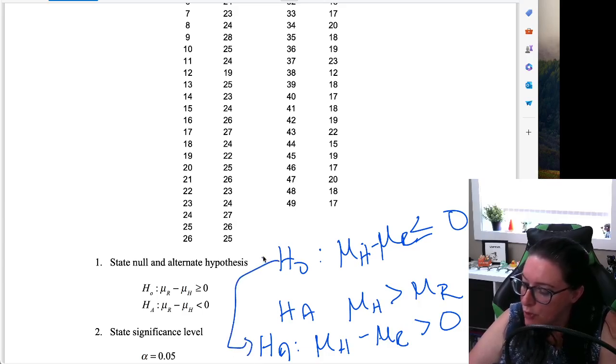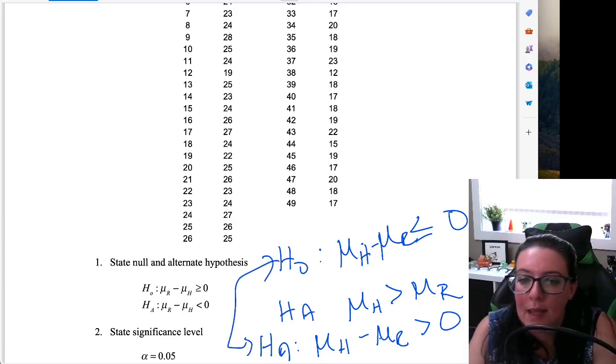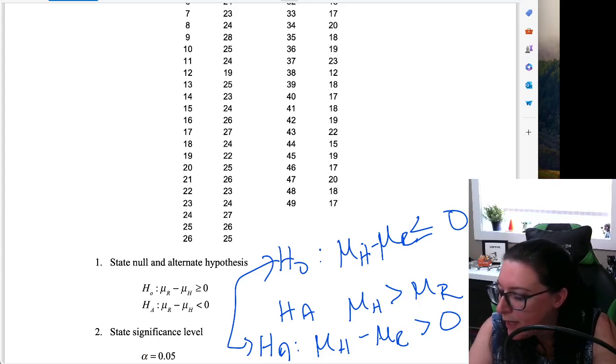So they must be mutually exclusive. They must cover all the options. The equals are always in the null hypothesis. So in this case, if I write it this way, hired minus rejected greater than zero is the alternative, and then less than or equal is the null.